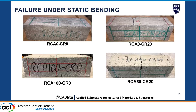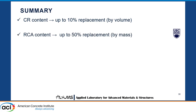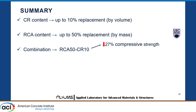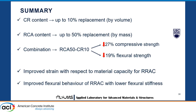To summarize the mechanical properties findings: a crumb rubber content up to 10% replacement by volume gives good strength. RCA content up to 50% replacement is optimum. For the combination of RCA and crumb rubber, the 50% RCA and 10% CR mix gave 20% less compressive strength than the control but still satisfied the 35 MPa design strength criteria, with only 19% reduction in flexural strength. All RAC mixtures showed improved strain at peak stress and improved flexural behavior with lower flexural stiffness.